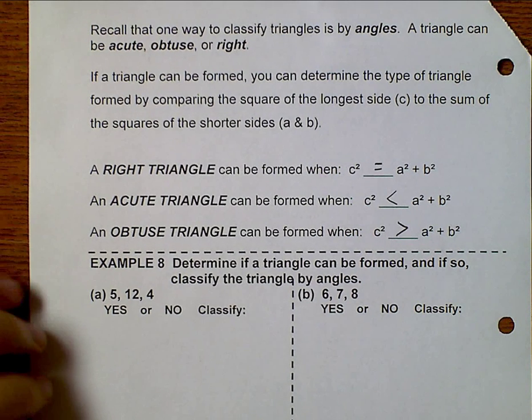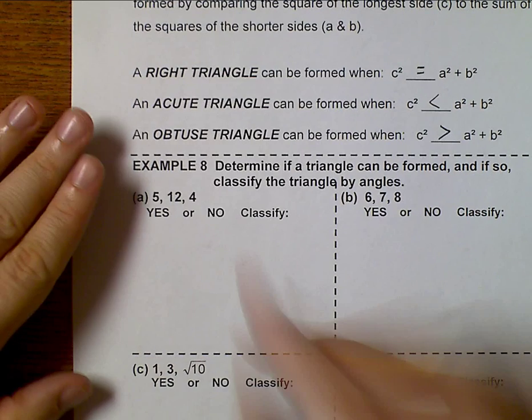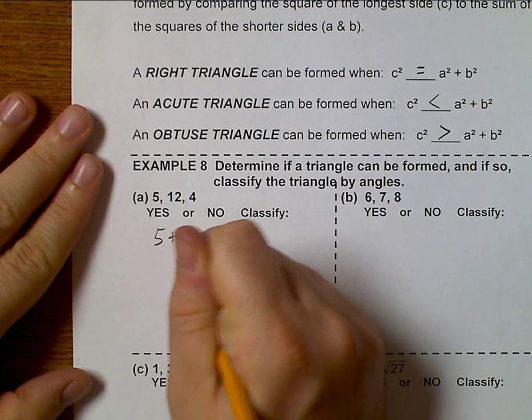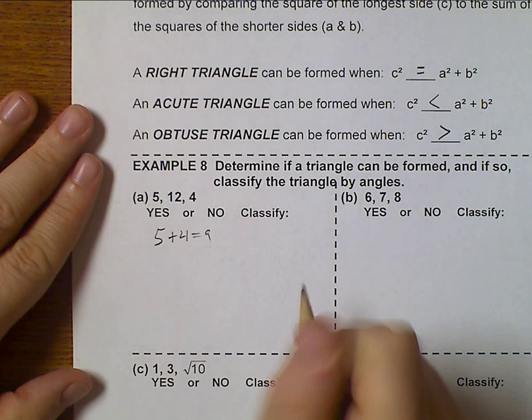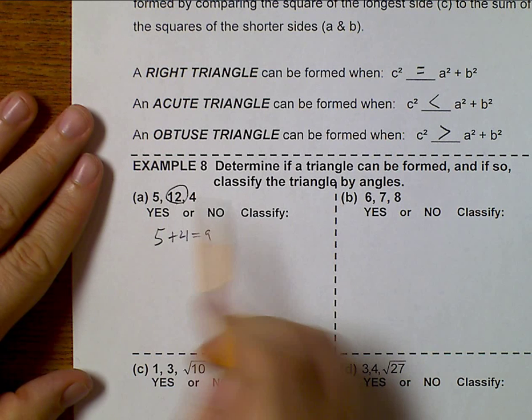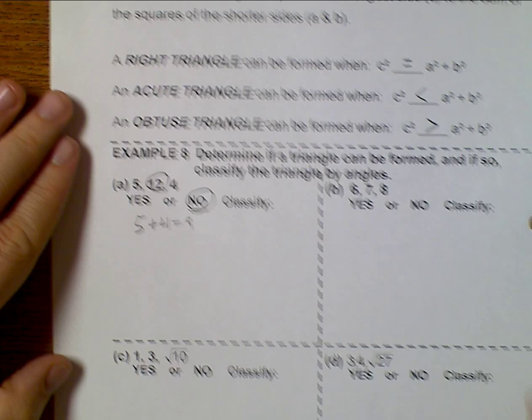Let's go ahead and put this into practice. First off, we want to see if this is a triangle. So 5 plus 4 is 9. I'm looking at that 12. No, this is not even a triangle. Moving on.